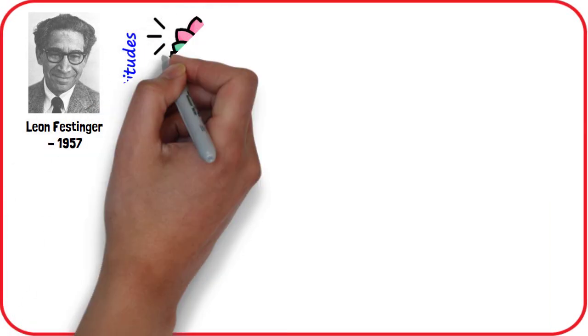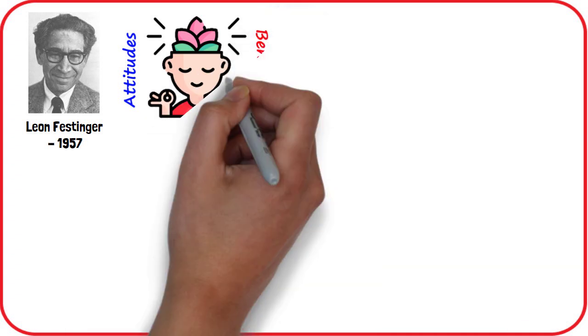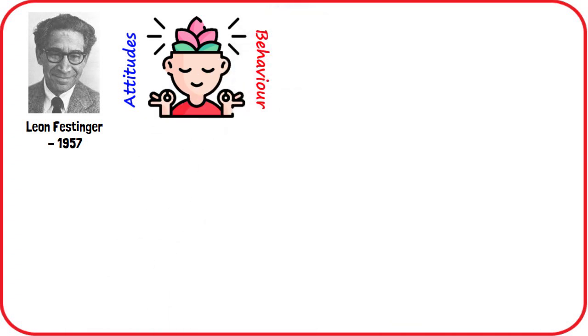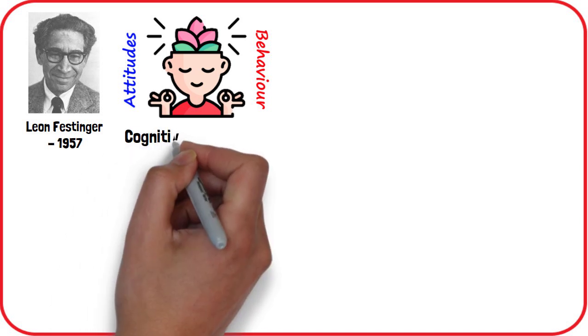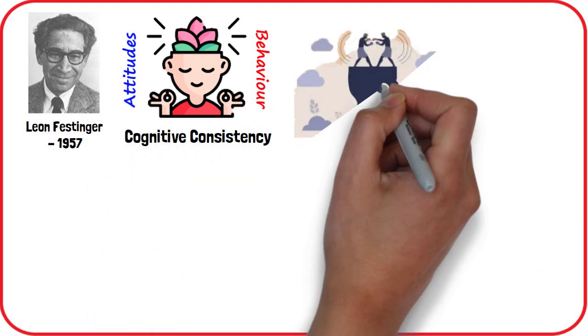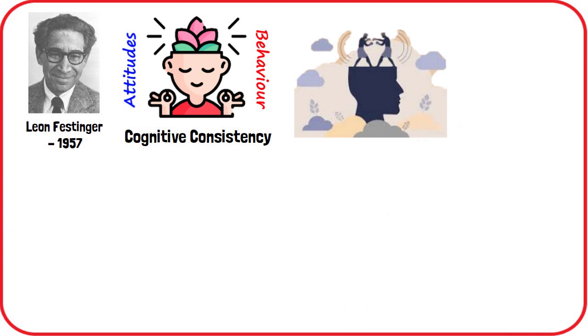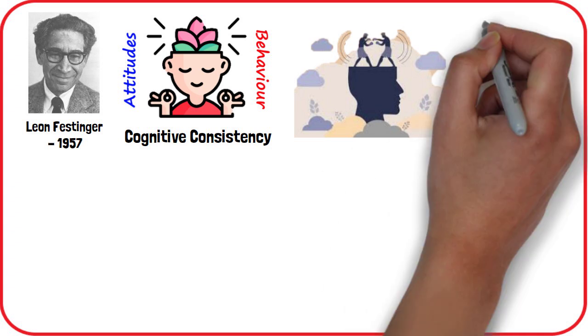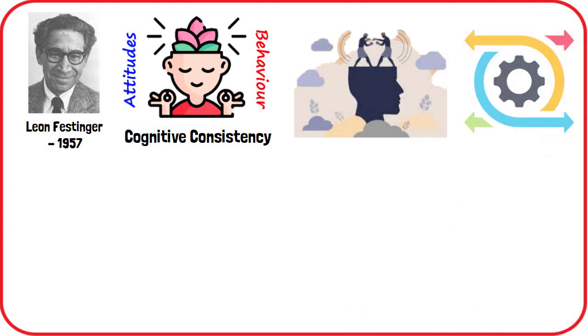Cognitive dissonance theory was first proposed by Leon Festinger in 1957. It suggests that we have an inner drive to hold all our attitudes and behaviors in harmony and avoid disharmony. This is known as the principle of cognitive consistency. When there is an inconsistency between attitudes or behaviors, something must change to eliminate the dissonance.